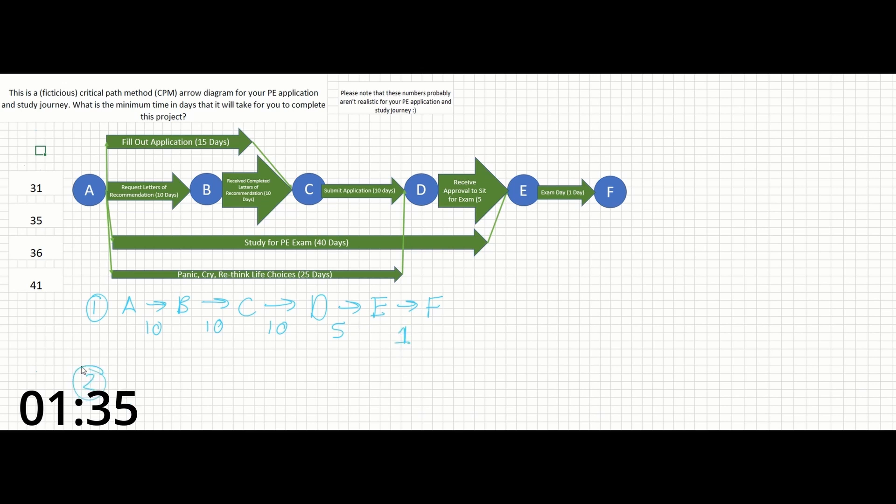Next, we can look at point A to point C to point D to point E to point F. So this will be 15 days, C to D 10 days, D to E is 5 days, and E to F is 1 day.